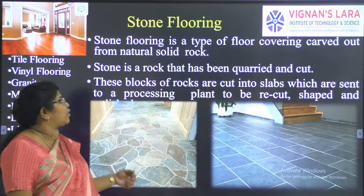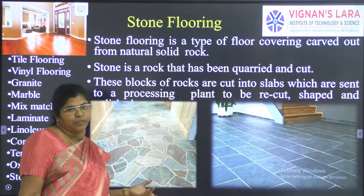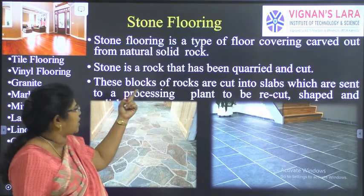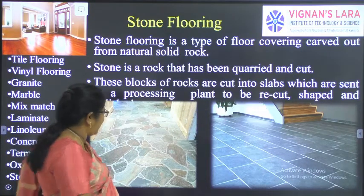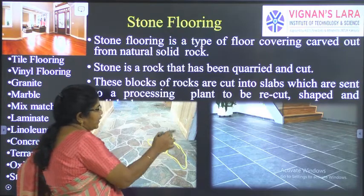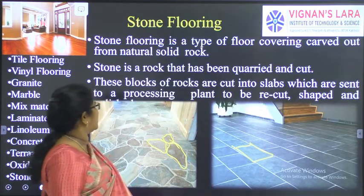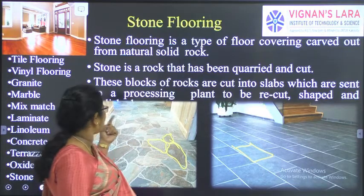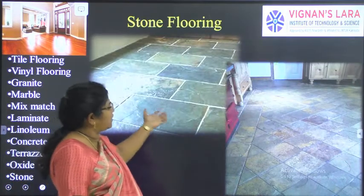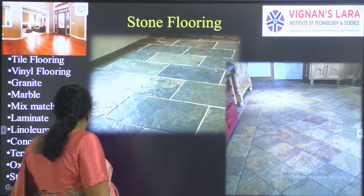The next type is stone flooring, which is a very rich type of flooring. It is a floor covering carved or cut out from natural solid rock. Stones are polished and cut — we can go for irregular uncut stones of different shapes to make a decorative flooring, or for ashlar flooring with properly cut stones. These blocks of rock are cut into slabs, sent to a processing plant, recut and shaped, and used as flooring — either square, rectangular, or irregular shapes.